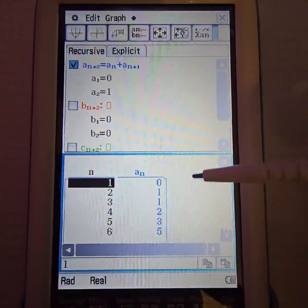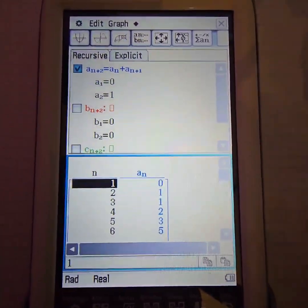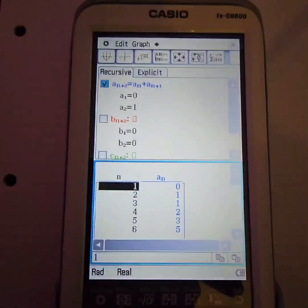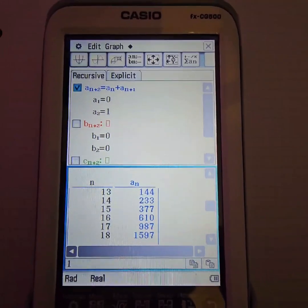So the first term is 0, the second term is 1, the third term is 1, etc. And you can also scroll down this list.